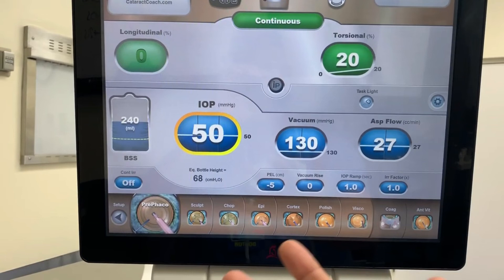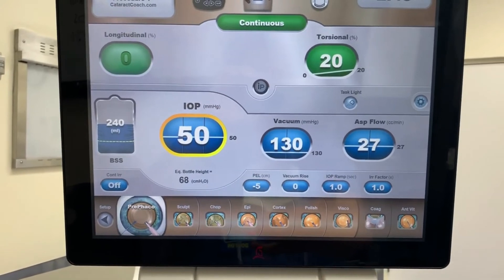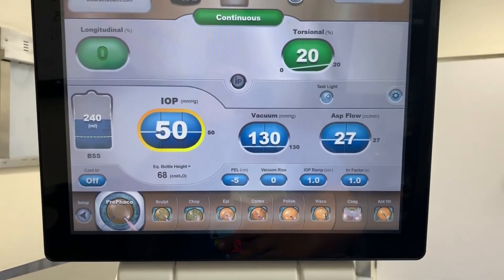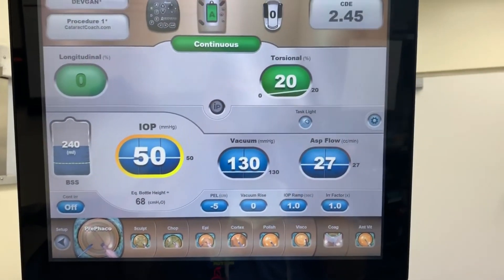Third is aspiration flow. The aspiration flow pulls material toward the phaco tip and the ultrasound movement of the phaco tip pushes material away. Vacuum holds nuclear fragments on the phaco tip. Surgeons can optimize their settings to improve this balance. Generally, low flow slows down intraocular events, while high flow speeds them up.